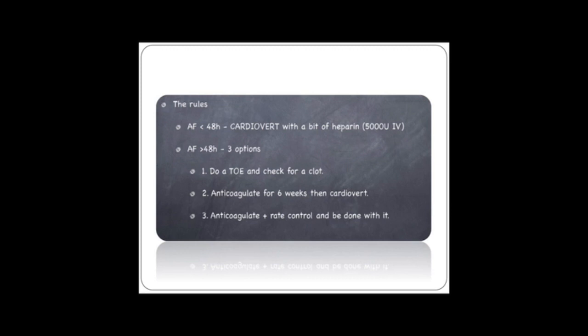The other option, if the atrial fibrillation has been long-standing, you either use rhythm control or rate control. So you can anticoagulate and then rhythm control six weeks later, or you can anticoagulate, rate control the patient, and then just simply be done with it, and they're on warfarin for life.